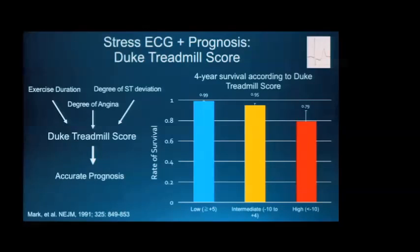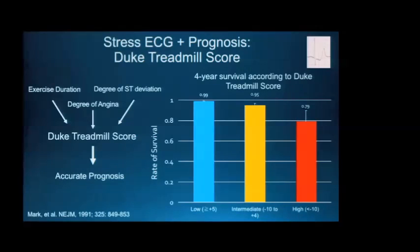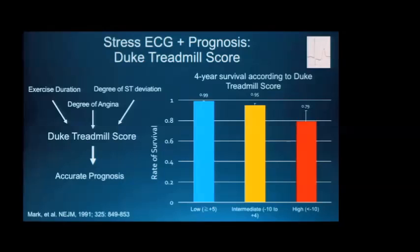The Duke Treadmill Score's prognostic ability was shown in the original validation study of outpatients undergoing stress ECG. In greater than 600 patients followed for over four years for mortality risk, patients with a low-risk score had only about a quarter of a percent annual mortality, while those with a high-risk score had greater than five percent annualized mortality. This allows us to identify patients likely to do worse who would benefit from more aggressive medical therapy or revascularization.